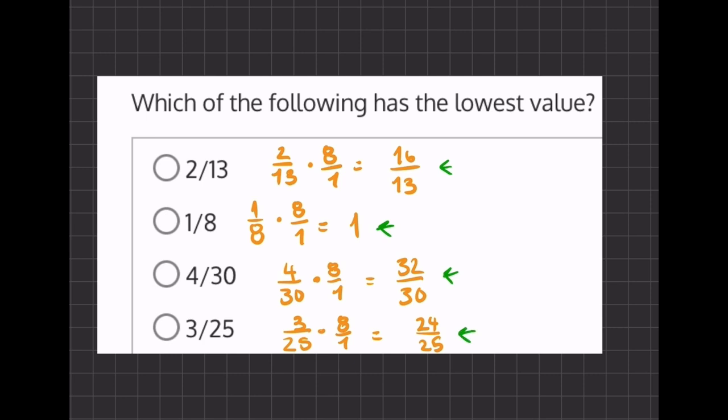But our last one, 24/25, is a bit less than 1, meaning that 3/25 will be our lowest value.